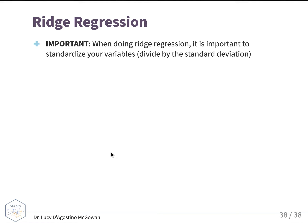An important note: when doing ridge regression, it's really important to standardize your variables, which means dividing by the standard deviation. The beta coefficients are penalized based on this constant penalty lambda, so they all need to be on the same scale — otherwise you would be penalizing variables just based on their scale, as opposed to whether or not they should really be penalized.